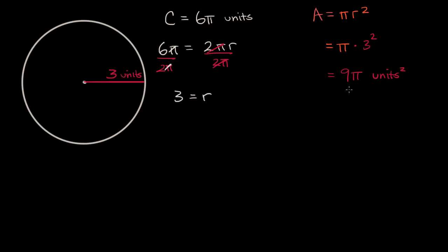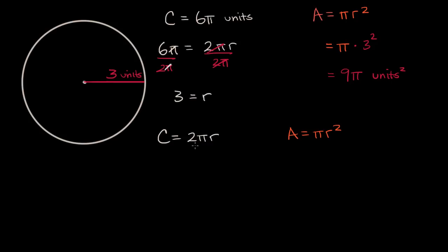Now let's see if we can come up with a general formula. We know that circumference is equal to two pi r, and we know that area is equal to pi r squared. Can we come up with an expression or a formula that relates directly between circumference and area? You could solve for r right over here and substitute back into this equation, or vice versa.